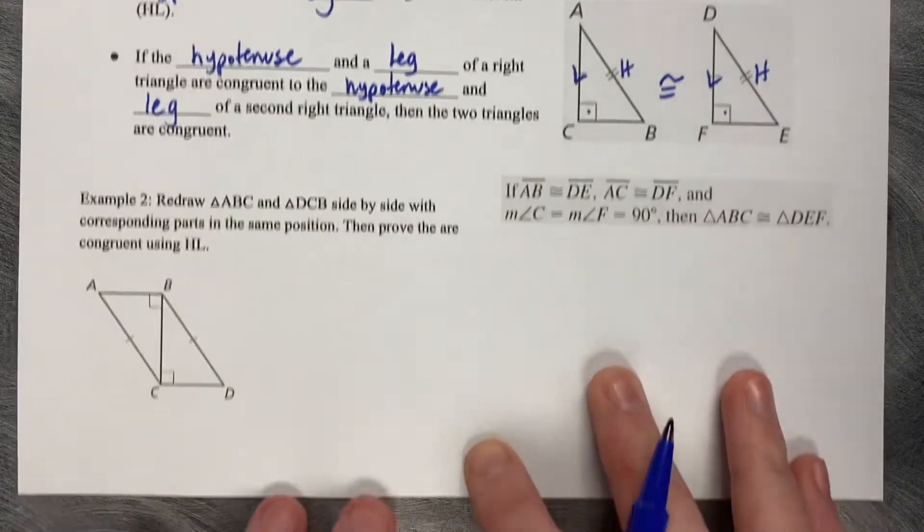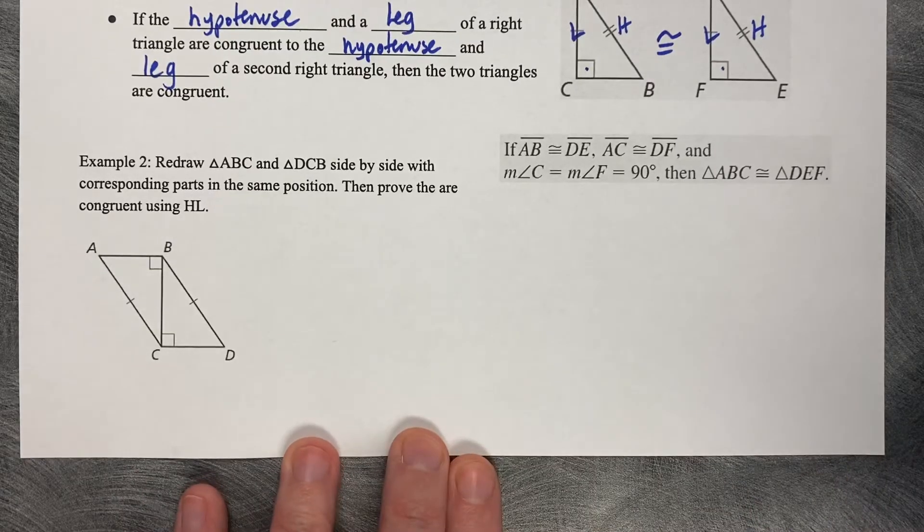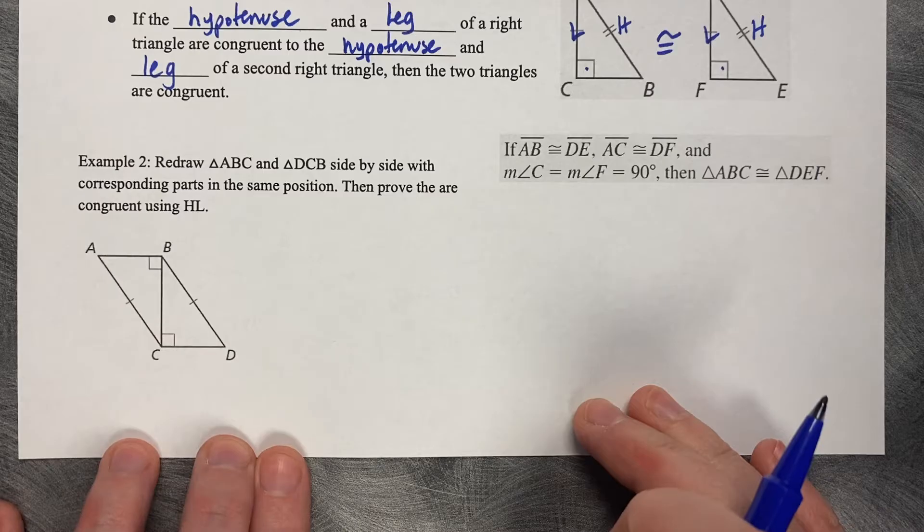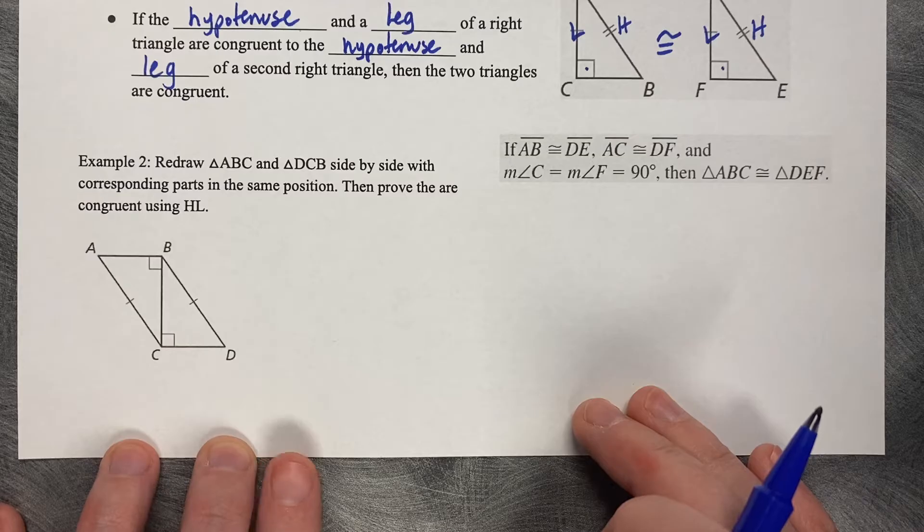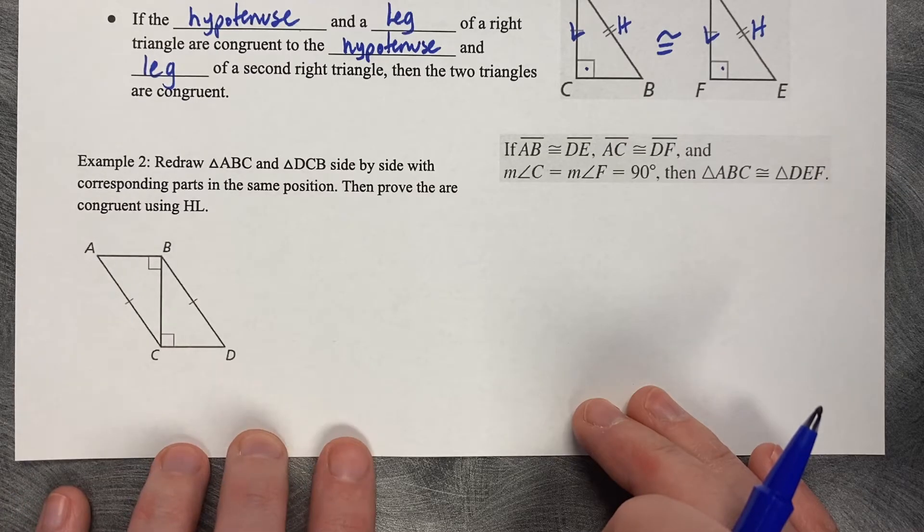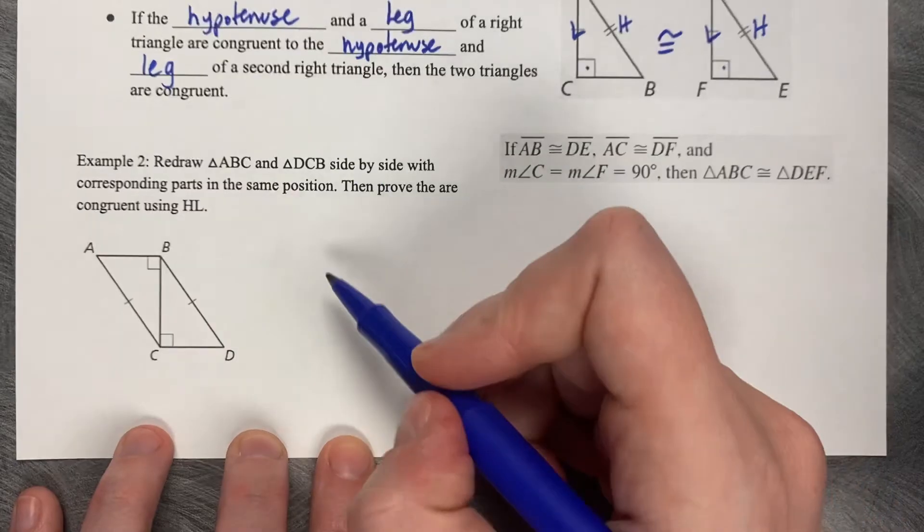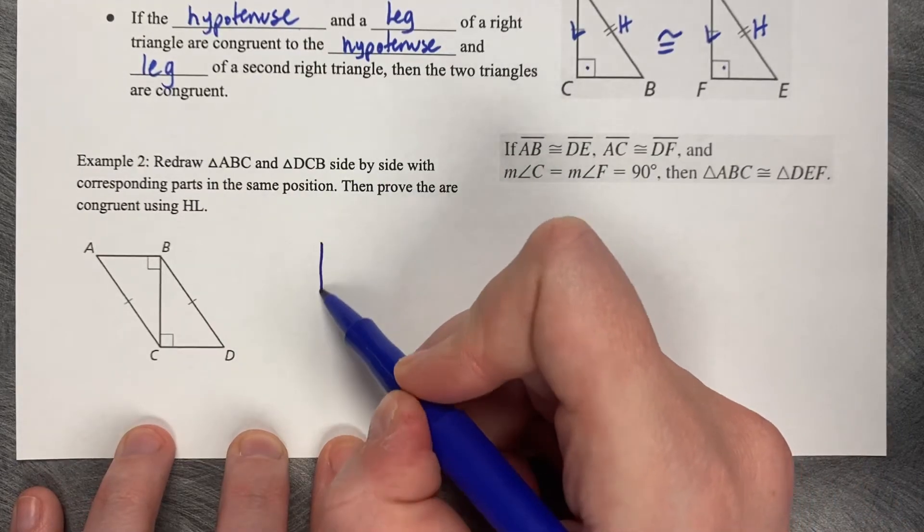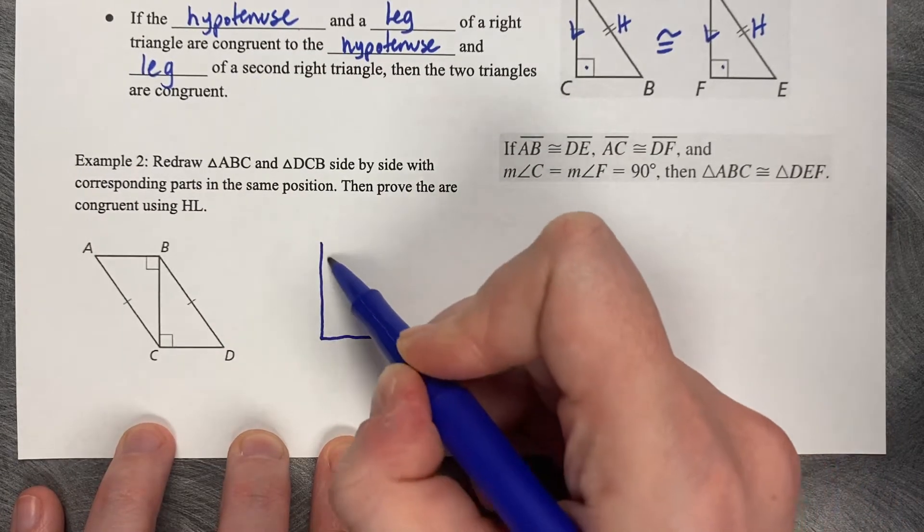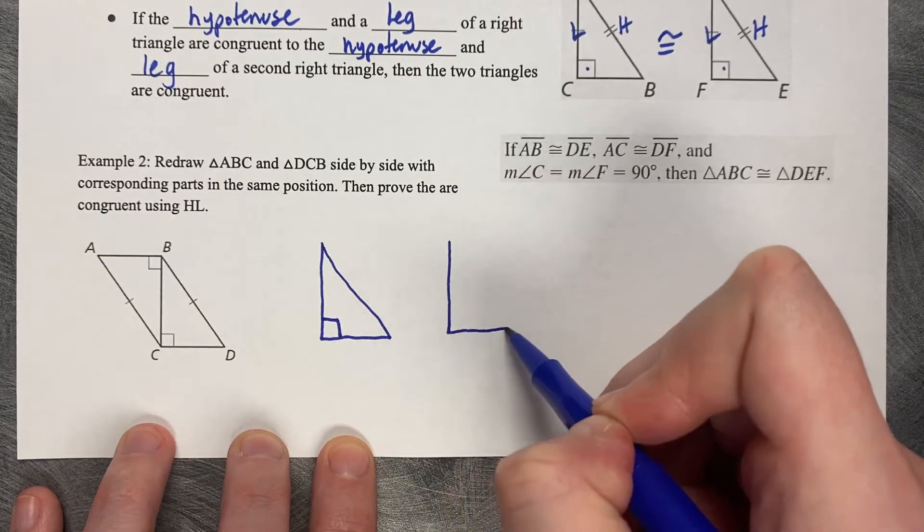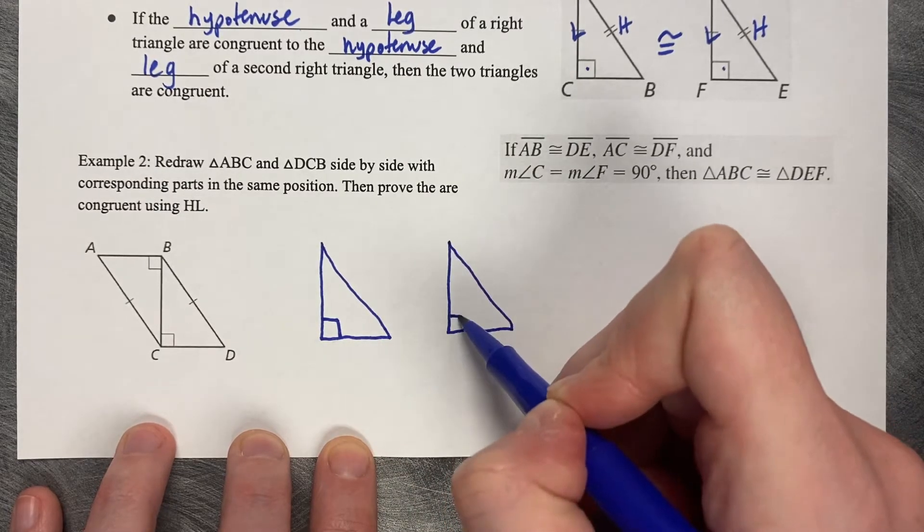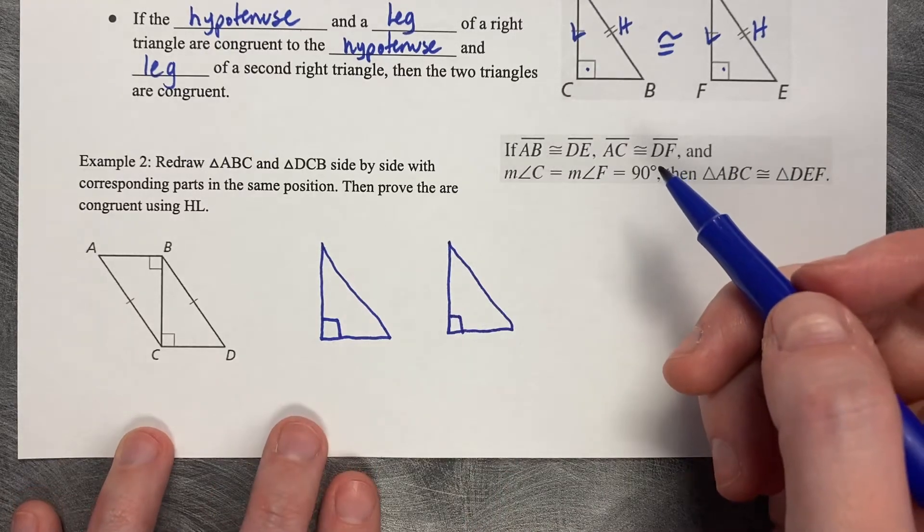Something you might need to do is reorient the triangles to see if hypotenuse leg is true. It says redraw triangles ABC and DCB side-by-side with corresponding parts in the same position. Then prove that they are congruent using HL. I like to draw them right side up, facing to the right.